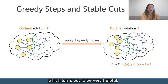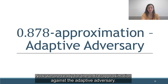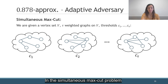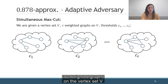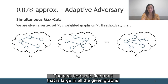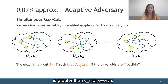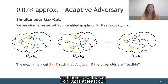And now we are ready for the 0.878 approximation against the adaptive adversary. Our algorithm uses an algorithm for another problem, which is called simultaneous MaxCut. In the simultaneous MaxCut problem, we are given a vertex set V, tau weighted graphs on the vertex set V, and thresholds c1 to c_tau. The goal is to find a cut that is large in all the given graphs. More precisely, we want to find the cut S such that the size of S on instance G_i is greater than c_i for every i.